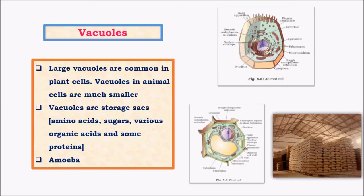Vacuole is also a very important part of plants; in animals it is very tiny. The main function of vacuole is to store substances manufactured by various cell organelles like amino acids, sugars, organic acids, proteins, and carbohydrates. The excess amount of substance is stored in vacuoles. Vacuoles can be compared to an FCI godown where things are stored for a long time until needed. Amoeba makes the best use of vacuole because it is a less developed organism; the vacuole plays an important role in both digesting and expelling food. So in amoeba, vacuole is the most important cell organelle.